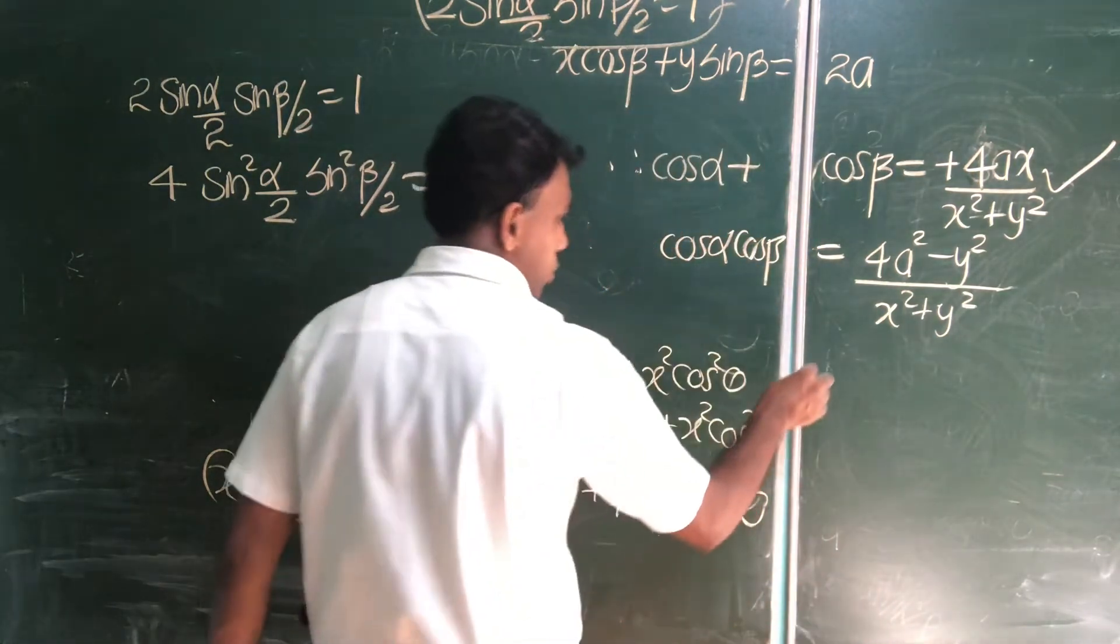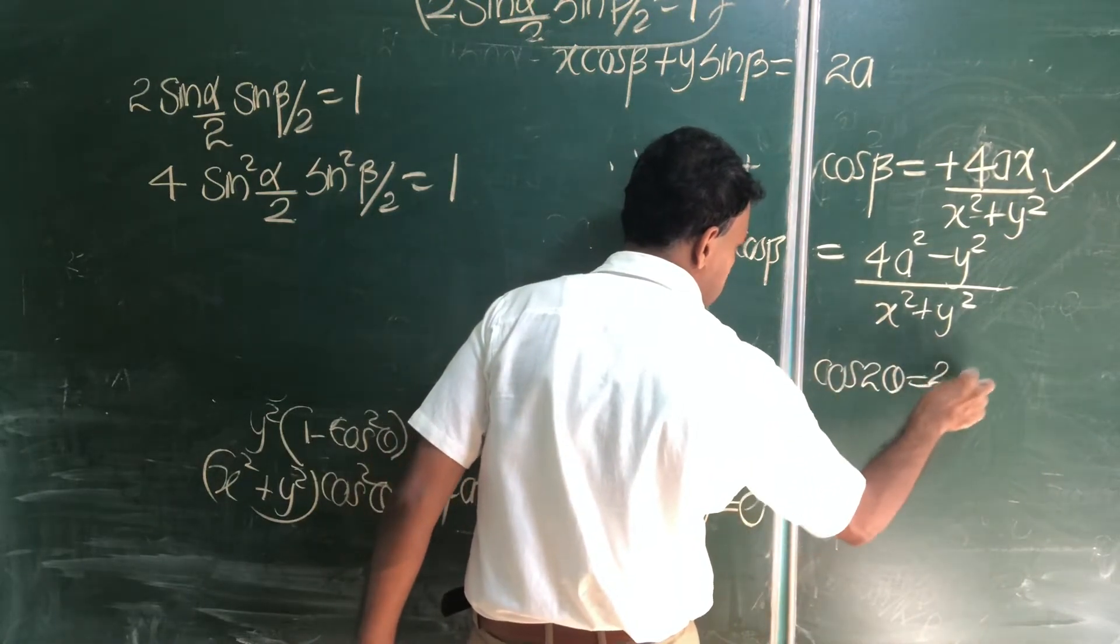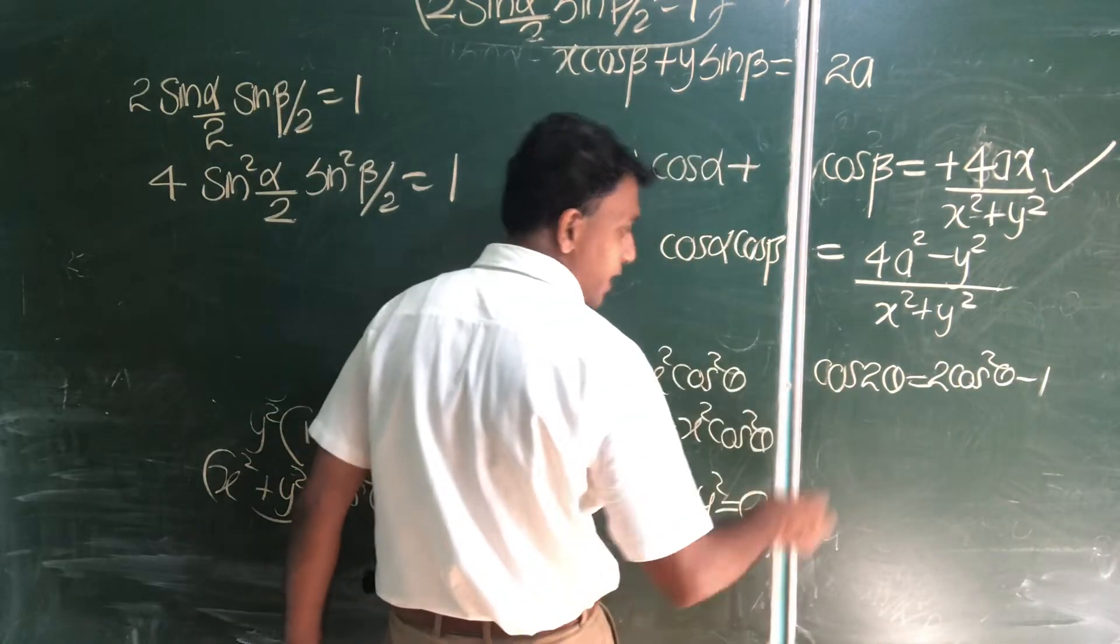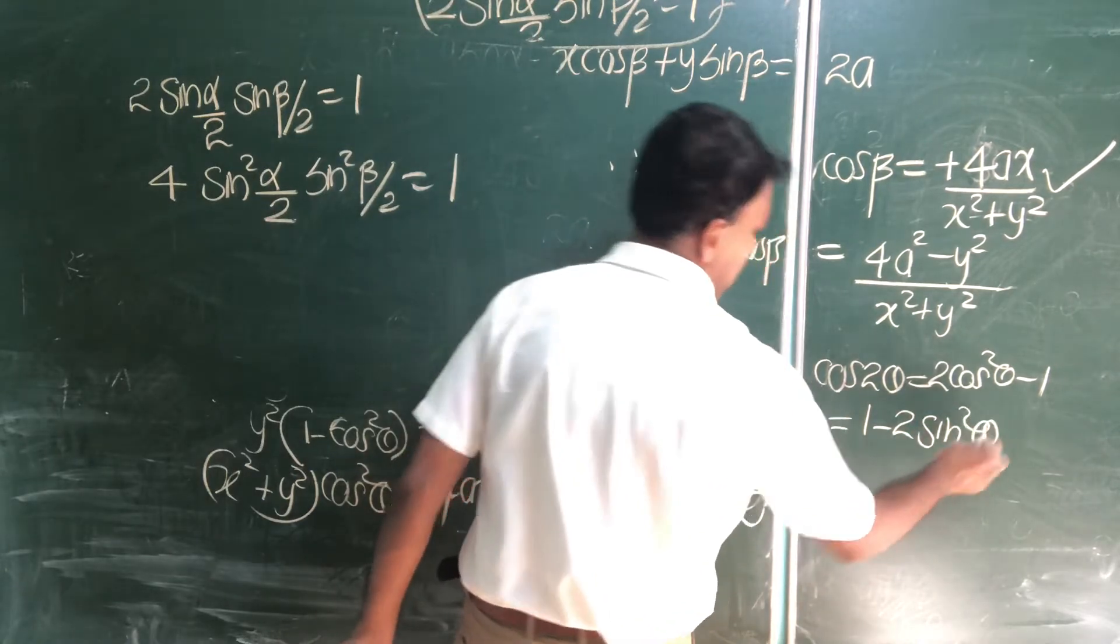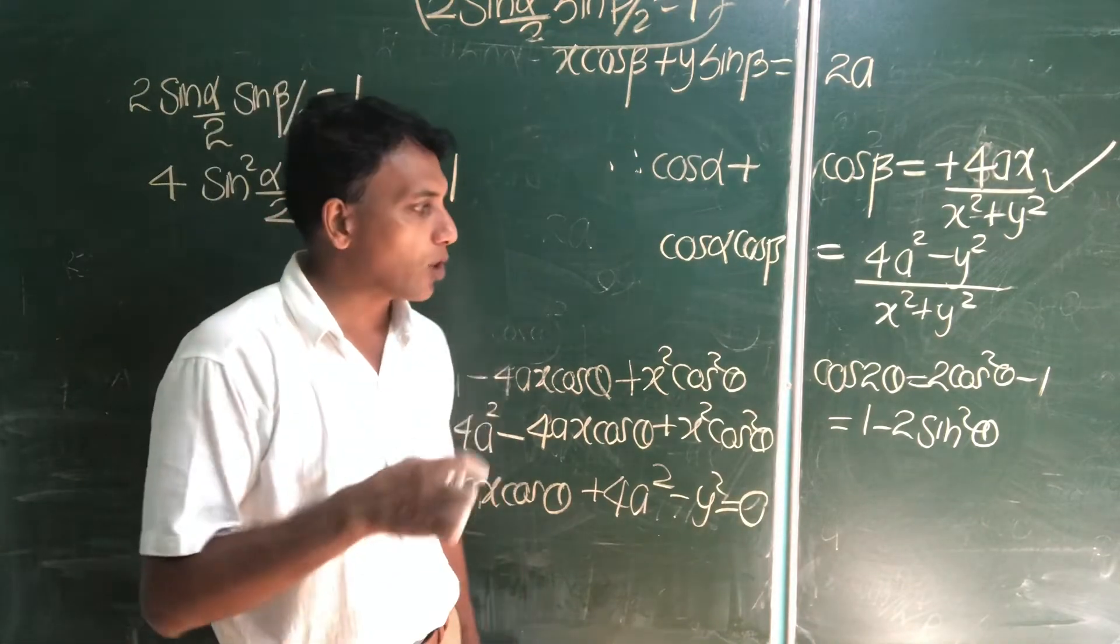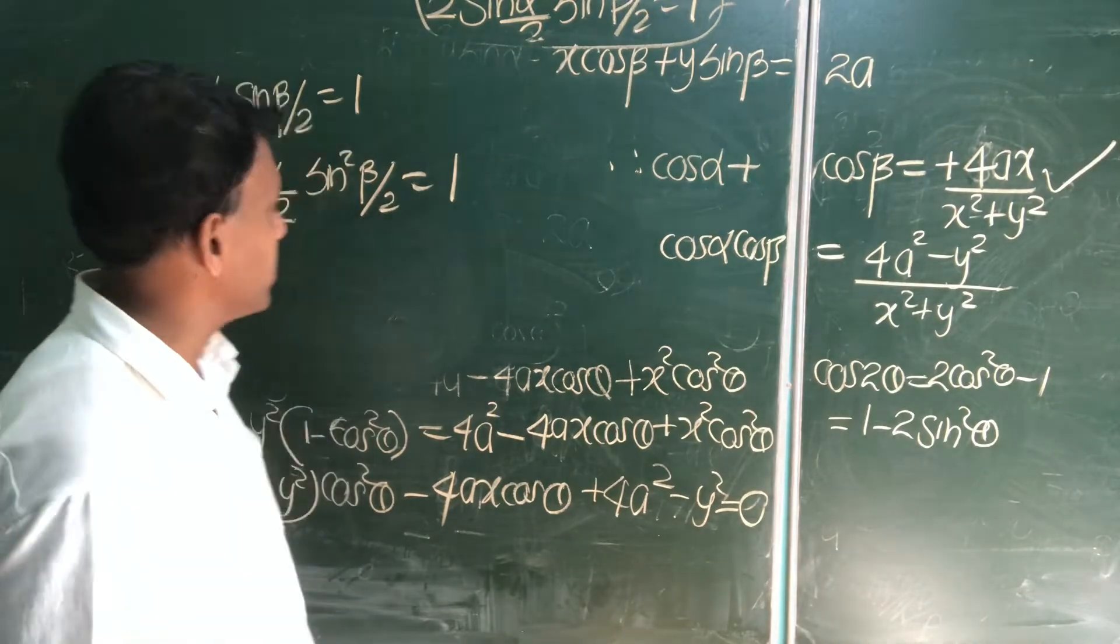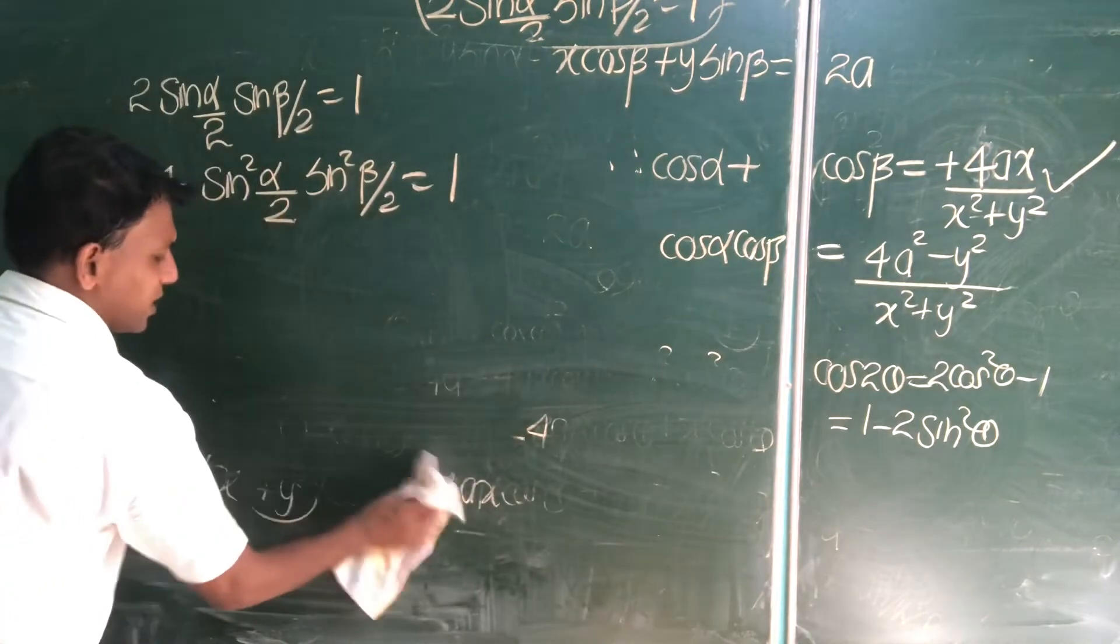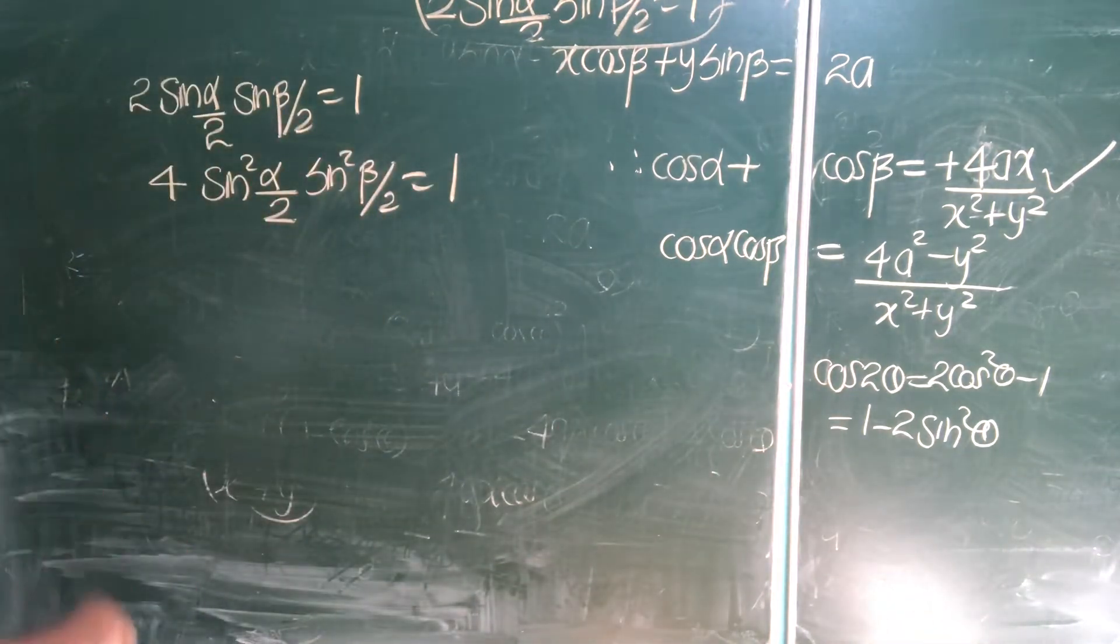You see now, cos 2 theta equal to cos square theta minus 1. Otherwise, 1 minus 2 sin square theta. Our target completely in terms of cos. This problem completely to be changed in terms of cos. Important problem you're after. Now, change this cos in this answer. Try to substitute the cos parts for here.